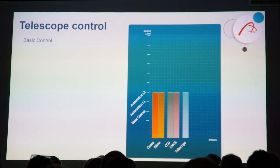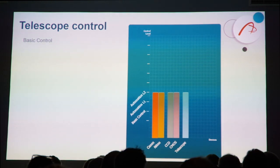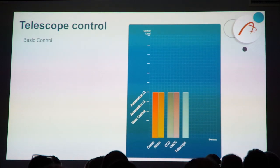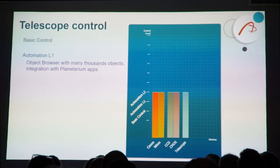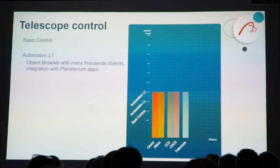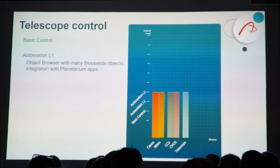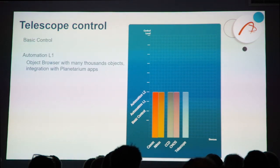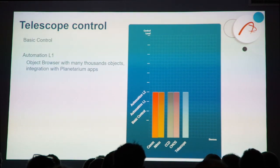Let's add another device on the horizontal axis: telescope control. The basic is obvious — we need to be able to drive a mount via ASCOM driver or Indigo driver. At the first automation level, we have tools that make pointing easier, like our object browser with thousands of preloaded objects and stars, and also connections to various planetarium applications, which many of us use during imaging.